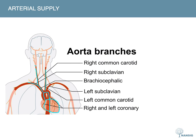On both sides, the common carotid splits into the internal and external carotid arteries. The external carotid arteries mainly supply the neck and the head, but not the intracranial structures. The intracranial structures are mainly supplied by the internal carotid arteries. Other relevant structures here are the vertebral arteries — the right vertebral coming off the right subclavian, and the left vertebral coming off the left subclavian.